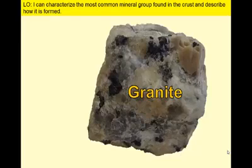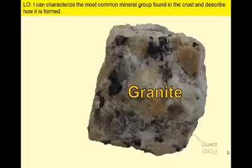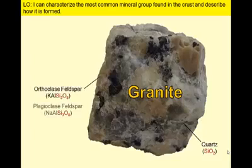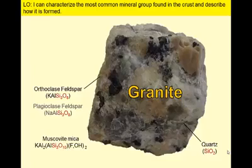Let's consider the rock granite, a common rock in earth's crust. Granite contains several silicate minerals. Some, like quartz, have a relatively simple composition and are composed exclusively of oxygen and silicon. Granites also contain one or more varieties of the mineral feldspar, which will have additional elements such as potassium, sodium, and aluminum. Most of the minerals in granite are light colored — they may be white, pink, tan, or clear.